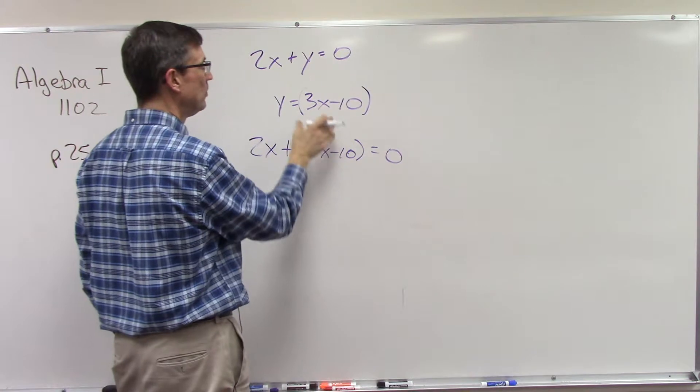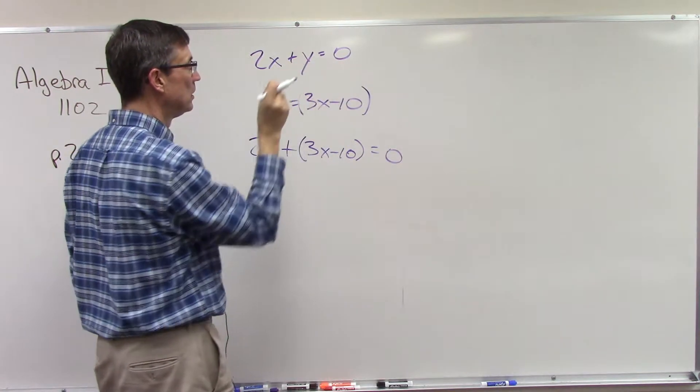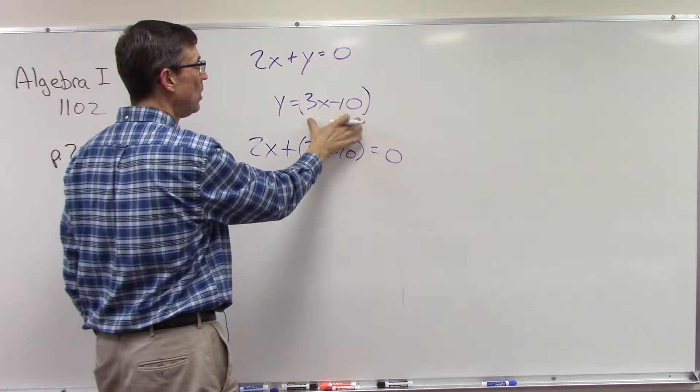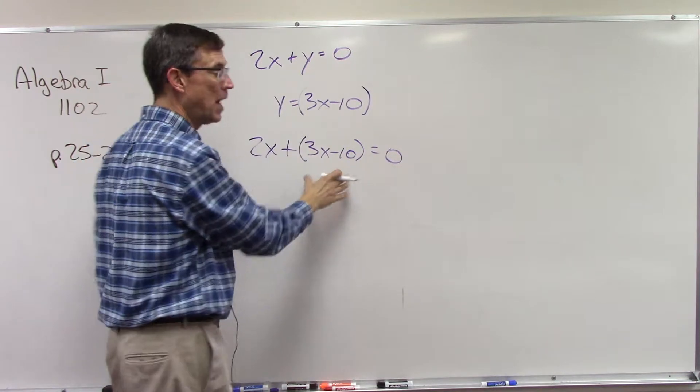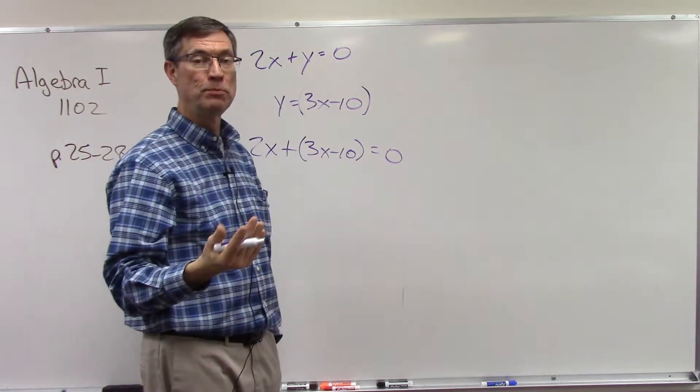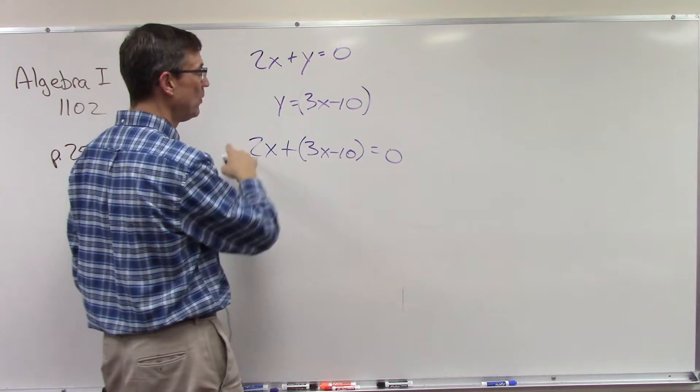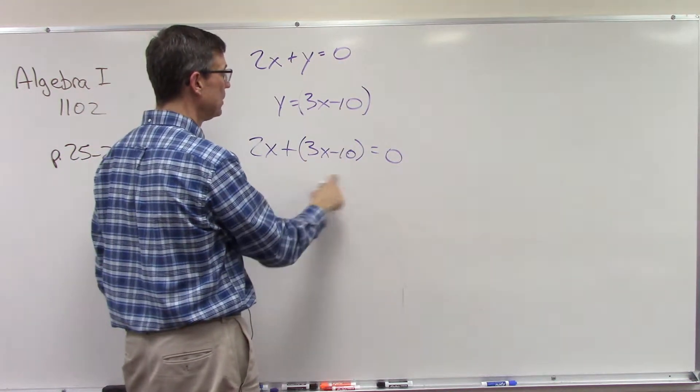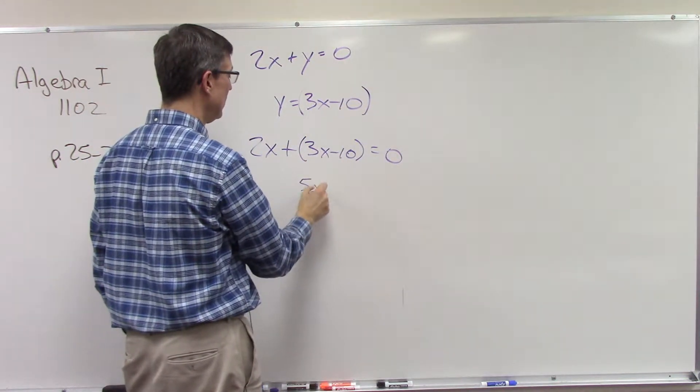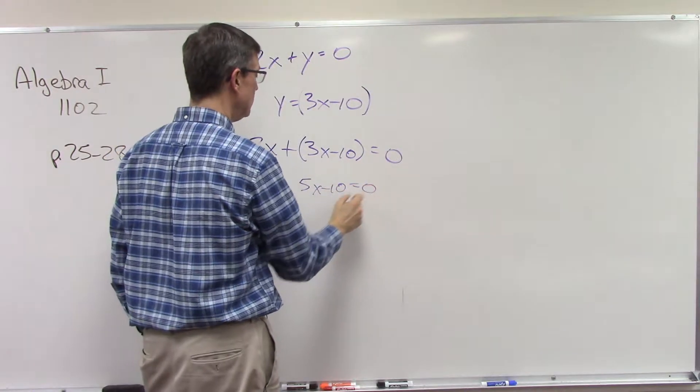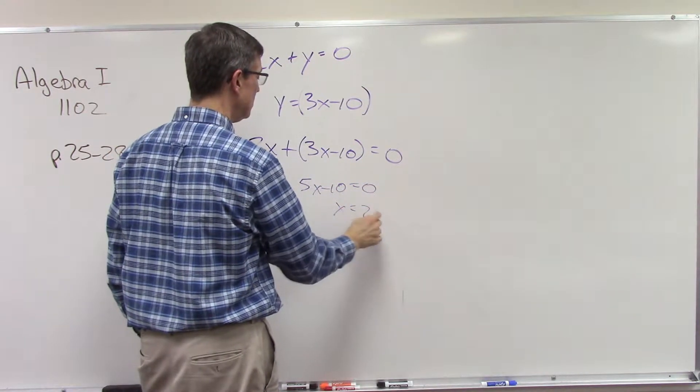So what we did there is we took out the y and then we plugged in what y is equal to into that spot. That's the beauty of substitution. Now we got rid of y basically, so now we can just solve for x. 5x minus 10 equals zero, so you can easily see what x is equal to.